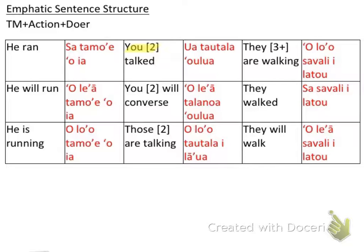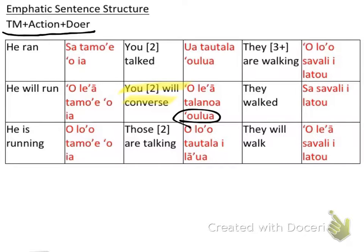The next one is 'you two will converse.' What tense are we speaking in? That's future tense — and a lot of times you can see future tense by the word 'will,' which corresponds to 'olea.' Then converse is 'talanoa,' and 'you two' goes next following the tense marker, action, doer structure. The last one in the second column is 'those two are talking' — right now they're talking, so that's the 'oloo' tense marker. Then talk is 'tautala,' and 'those two' or 'they two' is 'ilaua.'